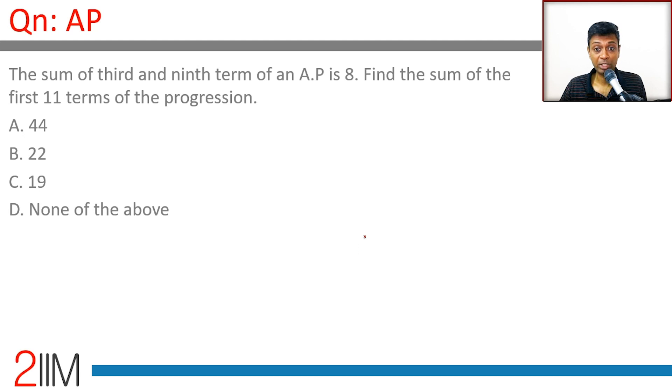The sum of the third and ninth terms of an AP is 8. T3, T9, these two add up to 8.